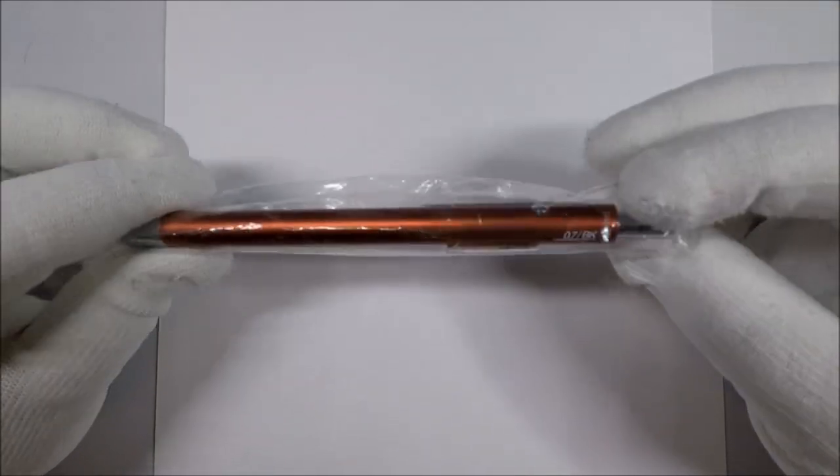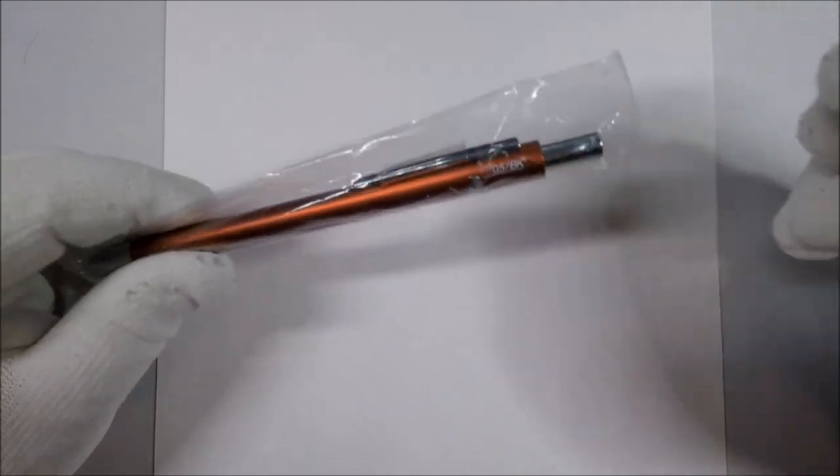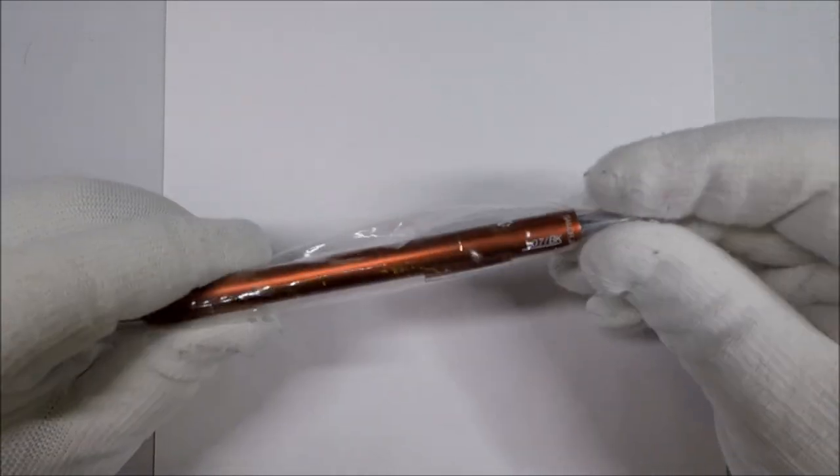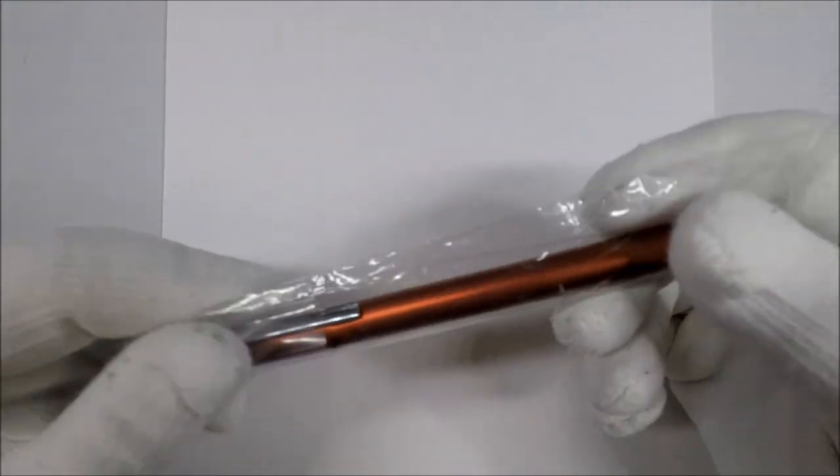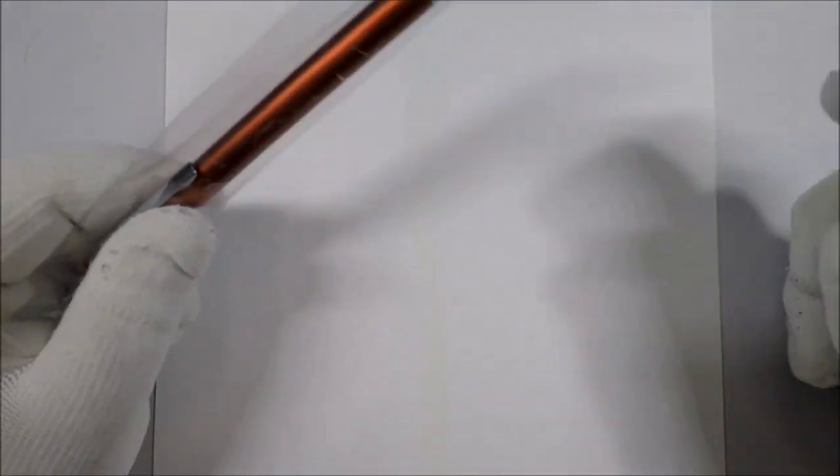And so what this means is it has a 0.5mm, a 0.7mm, and a 1mm black ballpoint. And let's check this thing out and take a look at it.